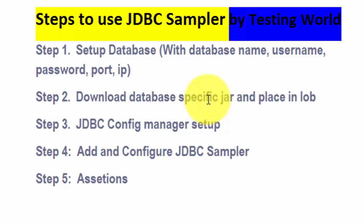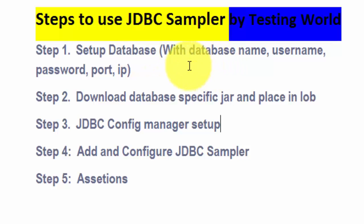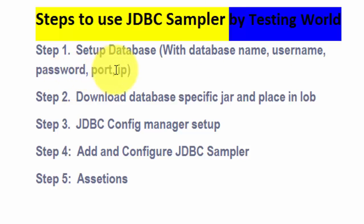These are the five steps which we are going to perform. First we need to set up a database - that's a prerequisite. You must have any database, either on your machine or on any remote machine. We need the database name, username, password, port number, and the IP of that machine. These are the details we need as a prerequisite.